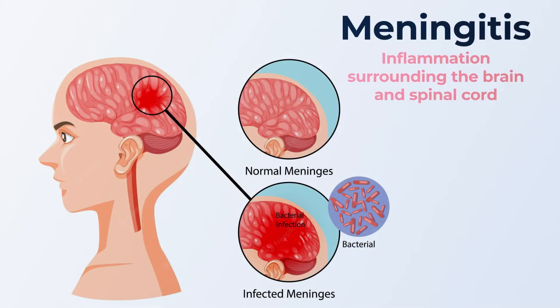Dr. Sajid here again with another topic — a very important and serious one. We're going to be discussing meningitis. You've heard of this disorder; it is actually an inflammation of the covering of the brain. The brain has layers or coverings, and when these get infected the condition is called meningitis. It is rather common in children and it's a serious disease, and we'll talk about what causes it and how to manage it.